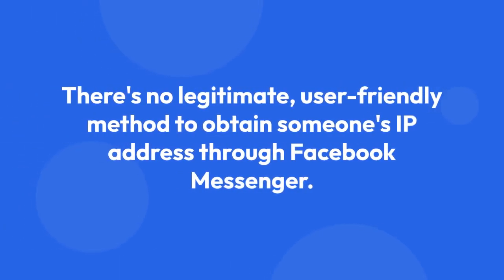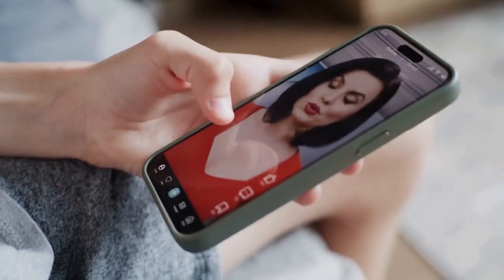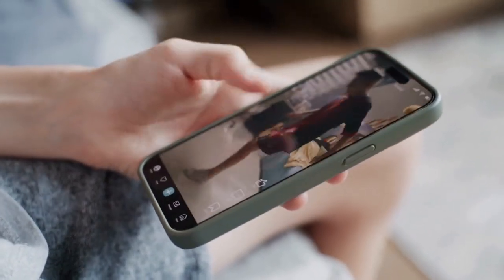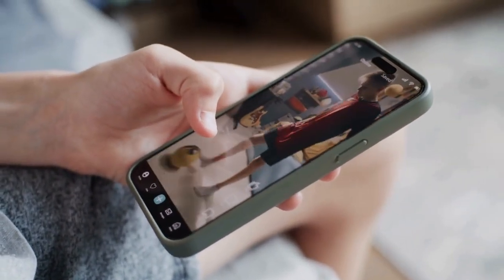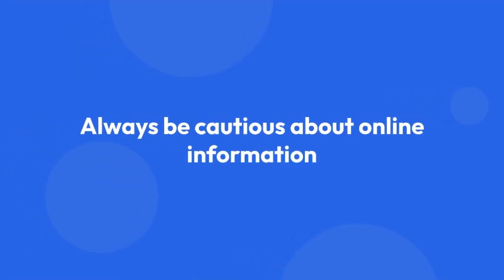In conclusion, there's no legitimate, user-friendly method to obtain someone's IP address through Facebook Messenger. Attempting to do so through unofficial means is risky, unethical, and possibly illegal. Facebook's security measures are in place to prevent this for a reason — protecting user privacy. Always be cautious about online information and avoid falling victim to scams or malware.